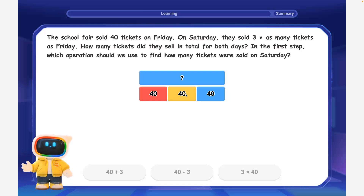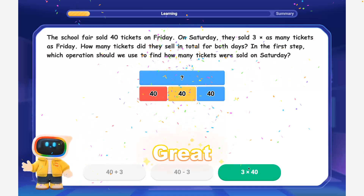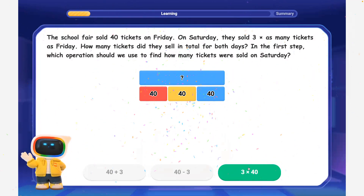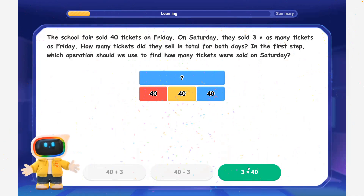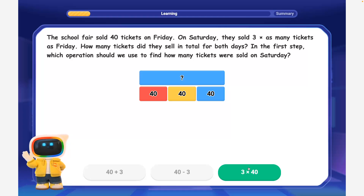In the first step, which operation should we use to find how many tickets were sold on Saturday? Great job! When we need to find three times as many tickets, we use multiplication. We multiply three times 40 to find Saturday's tickets.